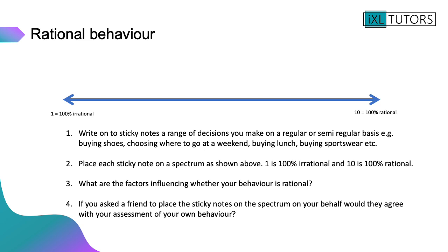There are two final activities today. First, think about how rational your own behavior is. Write on post-it notes a range of decisions you make on a regular or semi-regular basis — for example, buying shoes, choosing where to go at the weekend, or what you eat for lunch. Place them along a spectrum where 1 represents a 100% irrational decision and 10 represents a 100% rational one. Then ask someone else to place your sticky note on the spectrum — would they agree with your assessment?